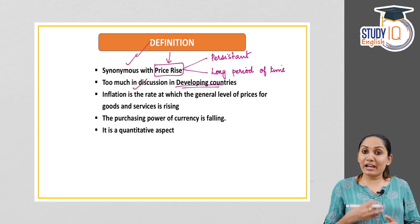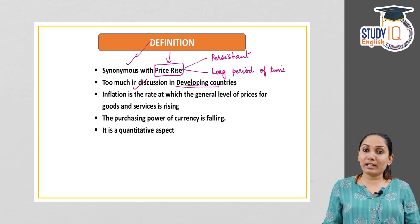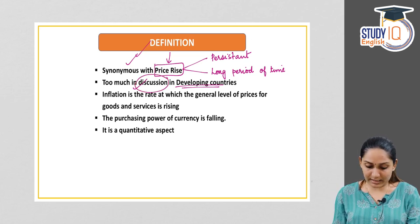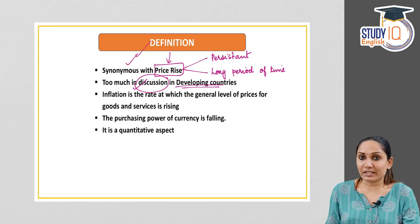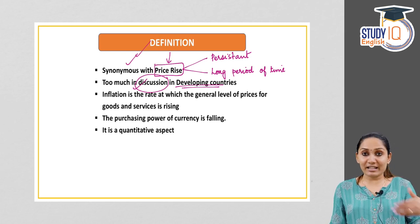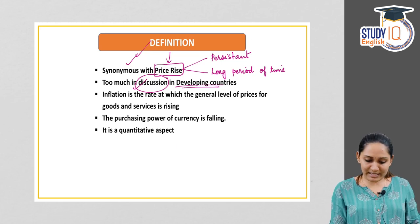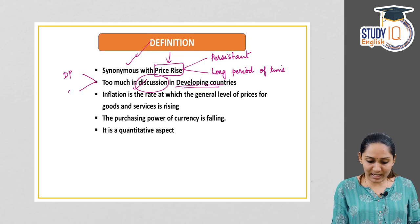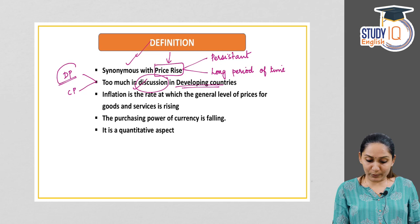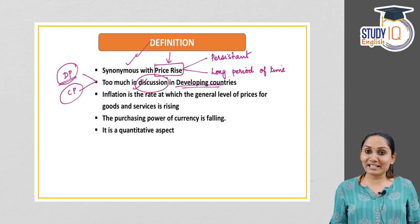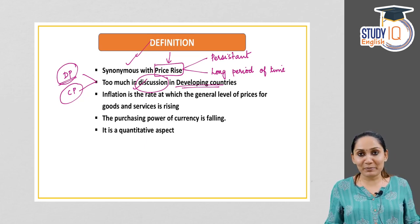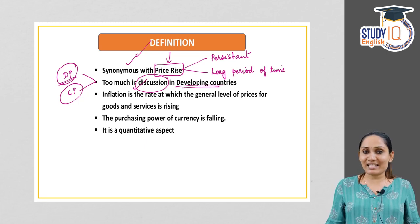Inflation affects developing countries more than developed countries, and that's why inflation is too much discussed in developing countries. There are two types of inflation: demand pull inflation and cost push inflation. In developed countries it is mostly demand pull inflation, whereas in developing countries it is mostly cost push inflation. Keep this in mind — when we discuss demand pull and cost push inflation we will understand that better.